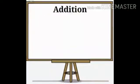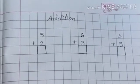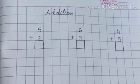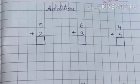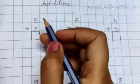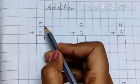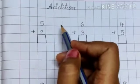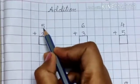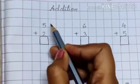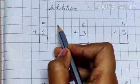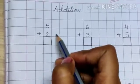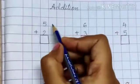Let's do a few exercises in our copy. We have the sums over here. Let's solve all the sums with the help of number lines. To draw the number lines, we have to look at the numbers and draw lines according to the number in front of them. Like we have number five, so we will draw five lines in front of five. And here we have number two, so we will draw two lines in front of number two.